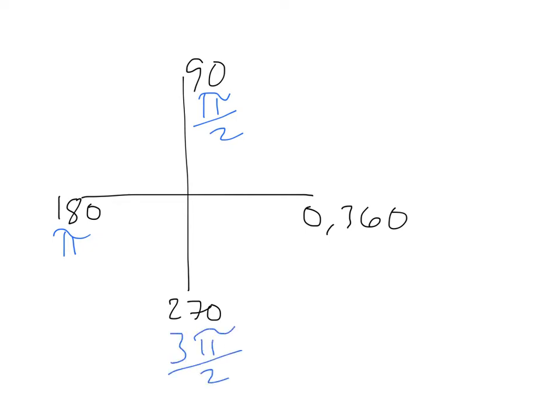So on the xy coordinate plane, we know that we have 0, 90, 180, 270, and 360, right? Well, in radians, still start with 0 on that one. But we have pi over 2 for 90, pi for 180, 3 pi over 2, or like 1.5 pi, for 270. And then for 360, it's 2 pi.